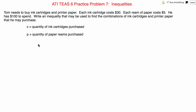Now since he is purchasing these items, we have to set up an inequality that includes the price of these items. The word problem says that each ink cartridge costs $30. So we're going to start setting up our inequality by including the price — first the price of each ink cartridge — and then multiply that price, $30, by the quantity purchased. So if we multiply $30 by C, the quantity of cartridges purchased, that will tell us the total amount that Tom spent on the cartridges.